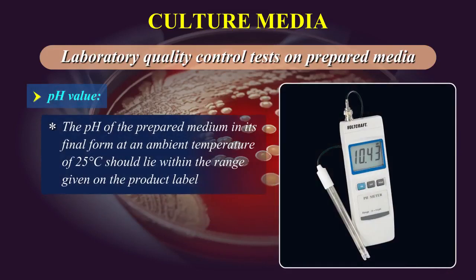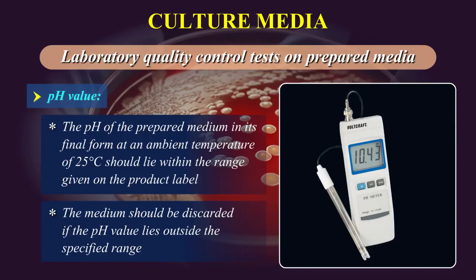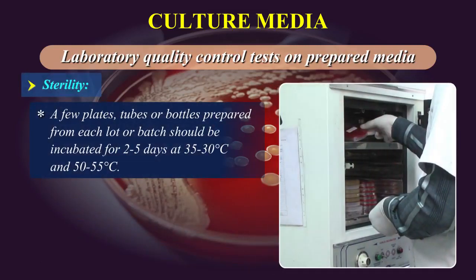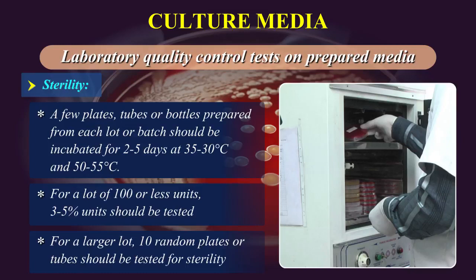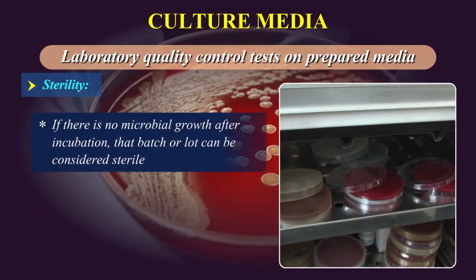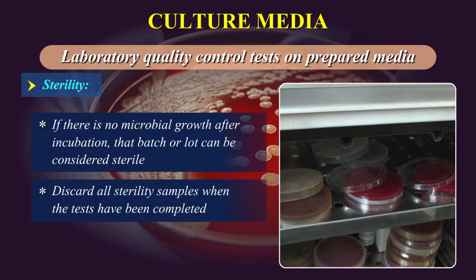pH Value: The pH of the prepared medium in its final form at an ambient temperature of 25°C should lie within the range given on the product label. The medium should be discarded if the pH value lies outside the specified range. Sterility: A few plates, tubes or bottles prepared from each lot or batch should be incubated for 2–5 days at 35–30°C and 50–55°C. For a lot of 100 or fewer units, 3–5% of units should be tested. For a larger lot, 10 random plates or tubes should be tested for sterility. If there is no microbial growth after incubation, that batch or lot can be considered sterile. Discard all sterility samples when the tests have been completed.